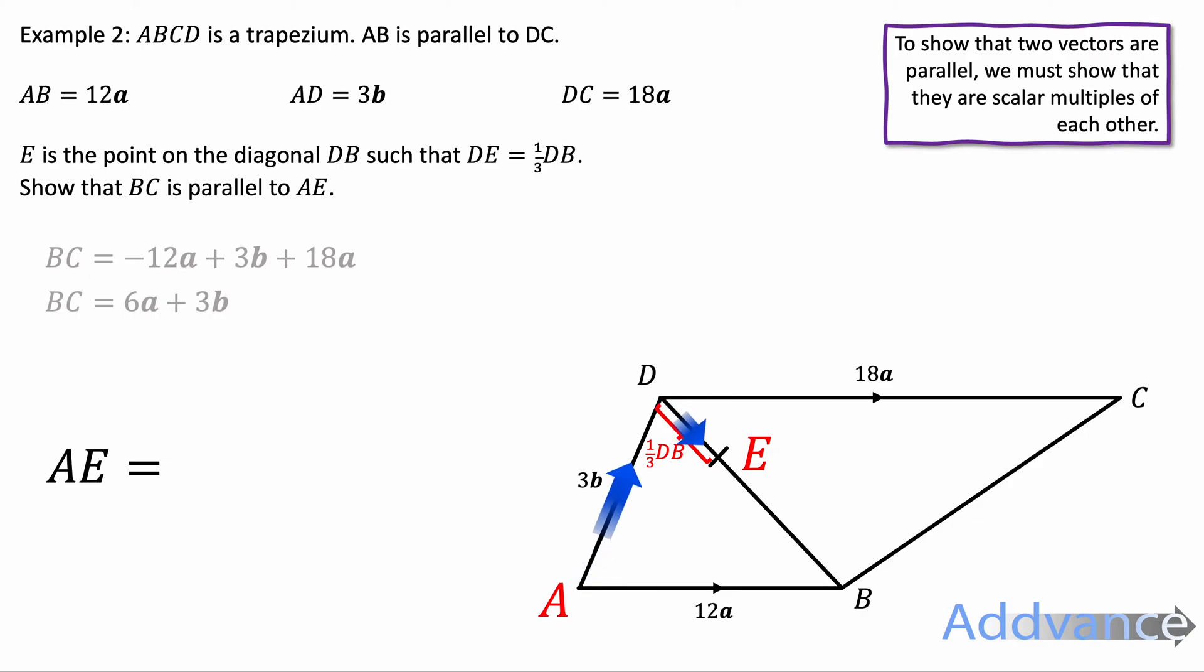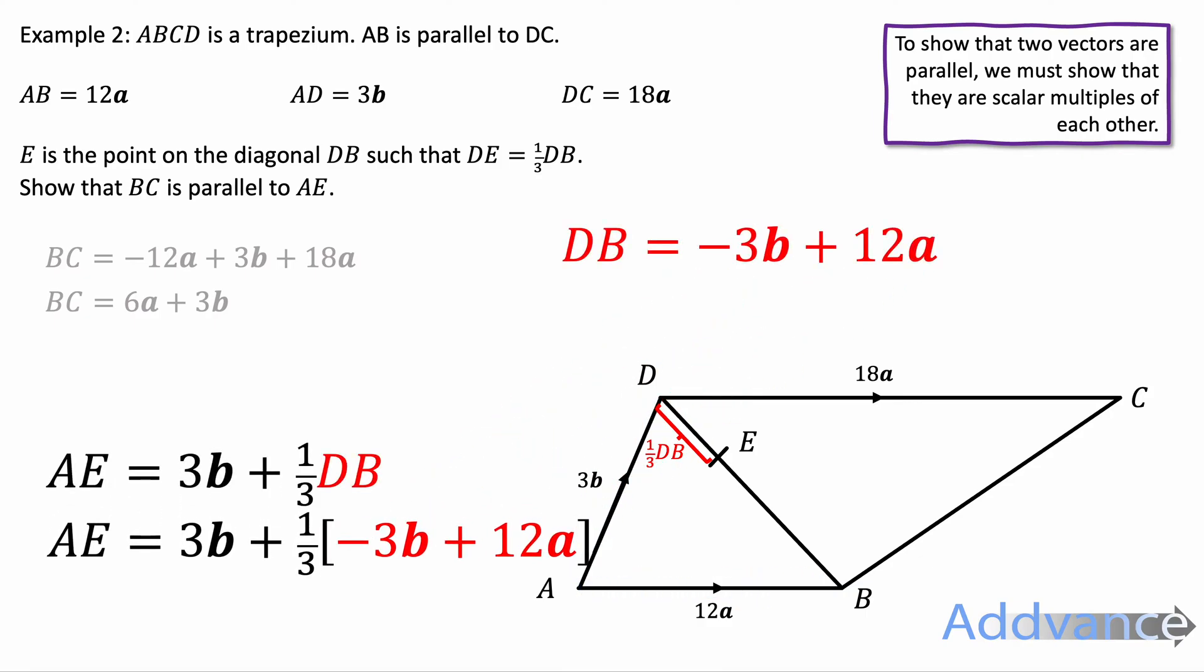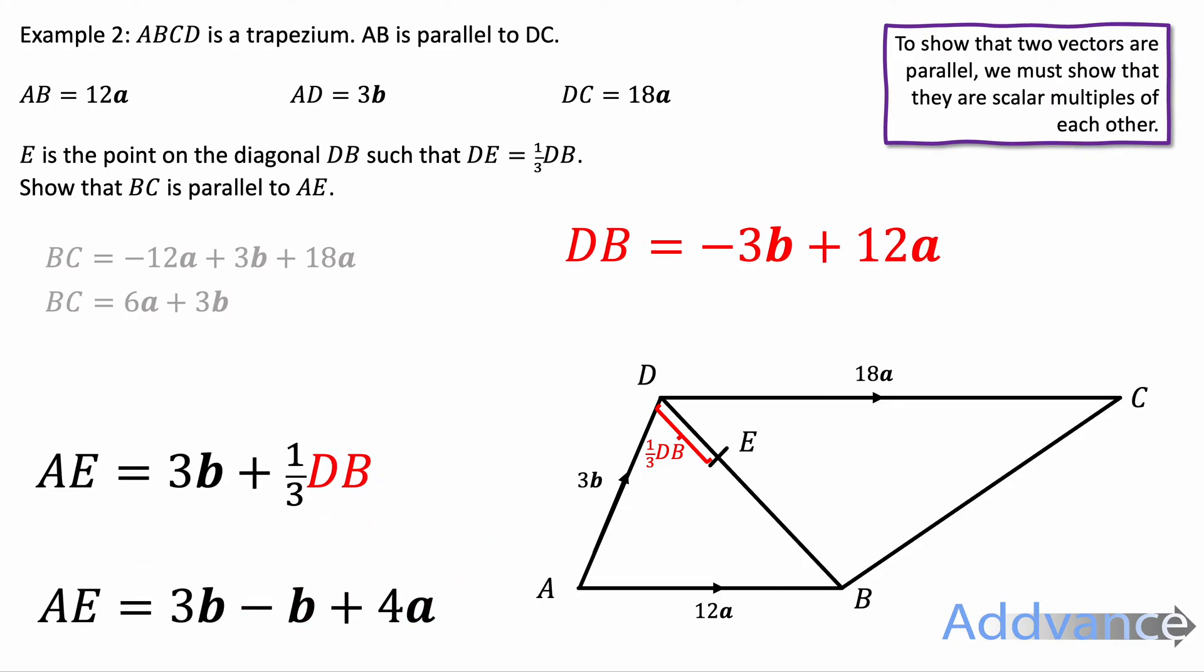The vector A to E now, we're going to go along this path. That is 3b plus a third of DB. But DB is minus 3b plus 12a. Because we're going backwards 3b and then across 12a. We substitute that into the question and then we expand the brackets. A third times 3b, minus 3b and a third times 12a gives us this. We then simplify. We get 2b plus 4a.